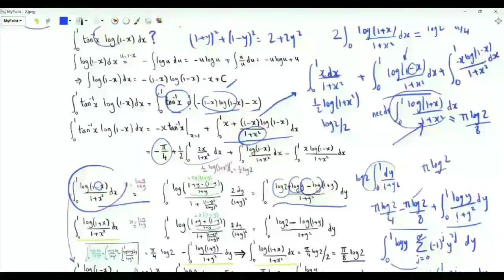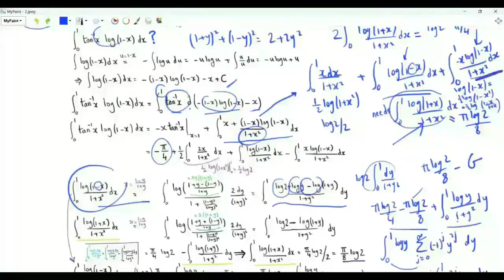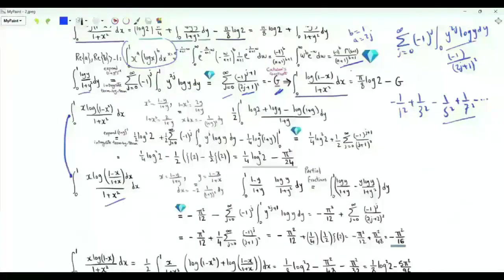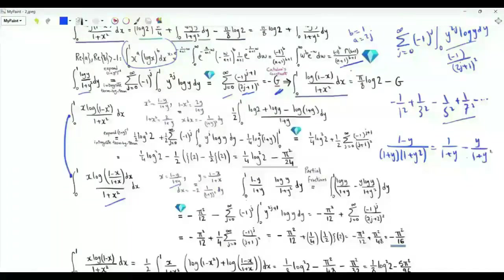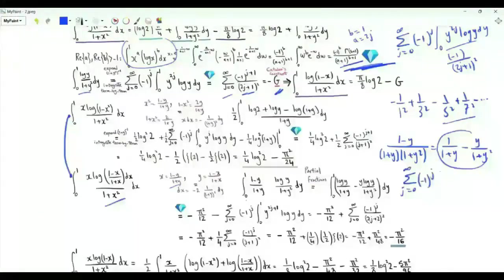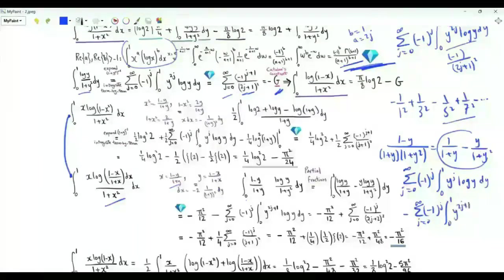So this integral equals pi log 2 over 8 minus G. For the remaining integral, note that log(1 minus x) equals one half log(1 minus x²) plus one half log((1 minus x) over (1 plus x)). To evaluate this integral we consider these two parts separately. For the second part we use the change of variables x equal to (1 minus y) over (1 plus y), obtaining the integral from 0 to 1 of (1 minus y) over (1 plus y) times log y over (1 plus y squared). Note that (1 minus 1/(1+y)) times (1 plus y squared) equals 1/(1+y) minus y/(1 plus y squared), so we split into two integrals, do series expansions and integrate term by term.